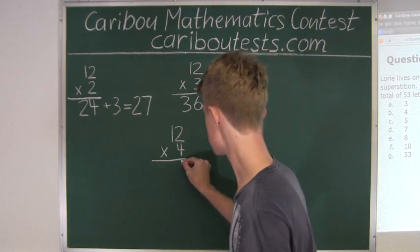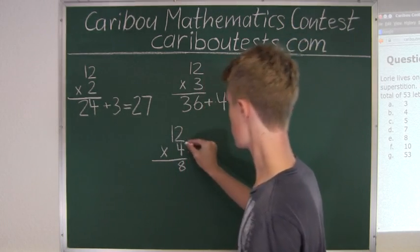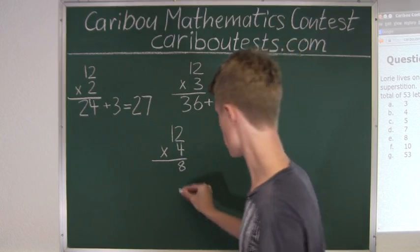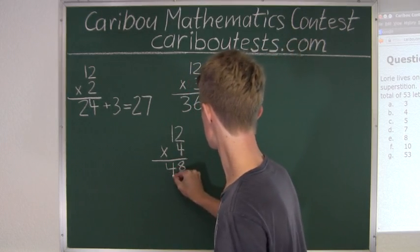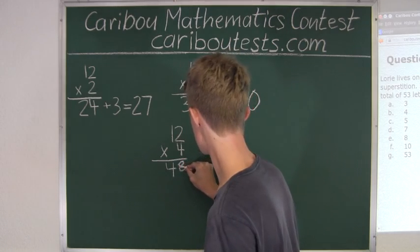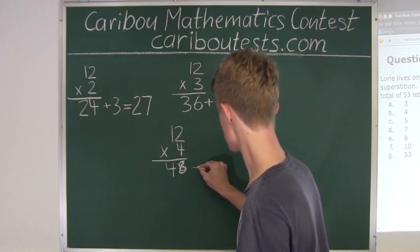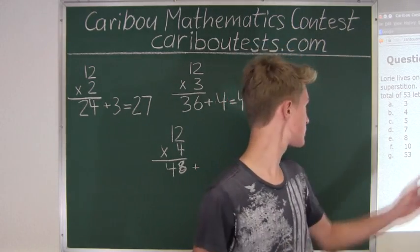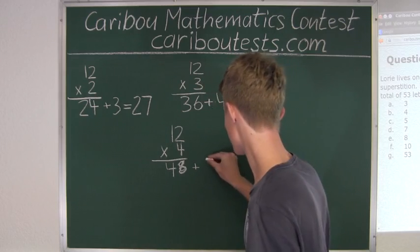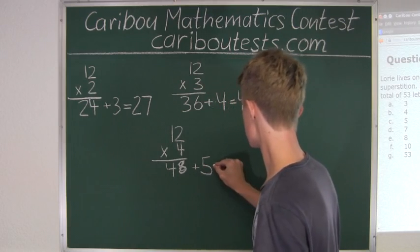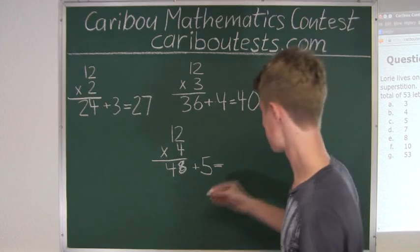We have 4 times 2 is 8, or 4 times 1 is 4. So this is 48 plus Lori's 5 letters. 48 plus 5 is equal to 53.